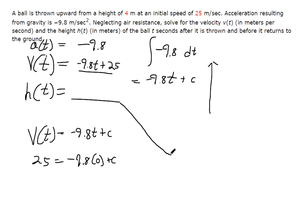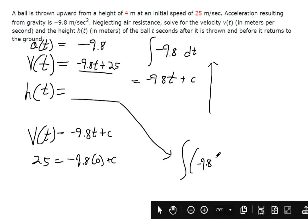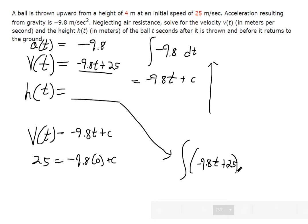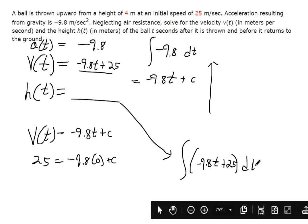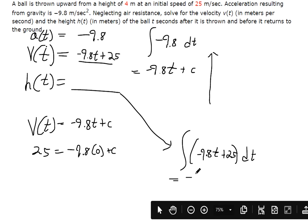And then we're going to do something similar to find the height. The height would be the anti-derivative of velocity. So we're going to find the indefinite integral with respect to t. That's negative 4.9t squared plus 25t plus some constant c.